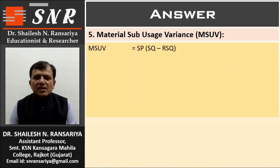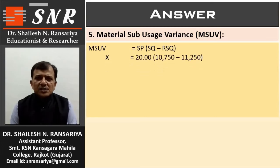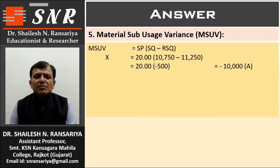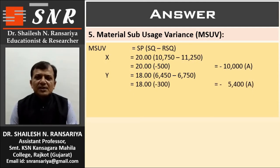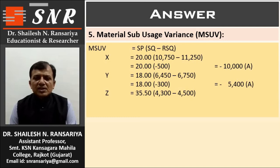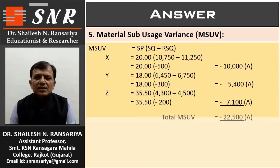Fifth variance: Material Sub Usage Variance. MSUV = SP × (SQ − RSQ). For X: 20 × (10,750 − 11,250) = 20 × (−500) = −10,000 adverse. For Y: 18 × (6,450 − 6,750) = 18 × (−300) = −5,400 adverse. For Z: 35.5 × (4,300 − 4,500) = 35.5 × (−200) = −7,100 adverse. Total MSUV = −22,500 adverse.